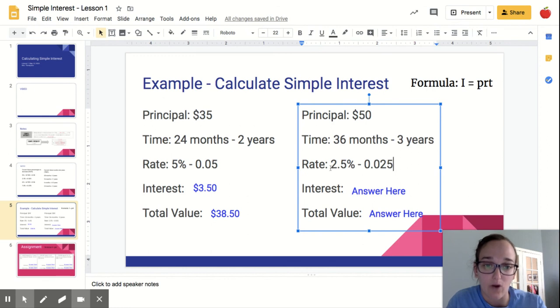2.5, go one, two places to the left. So one, two. So 0.025. And now I can just multiply those.